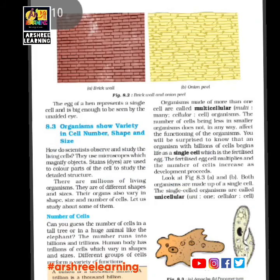In the figure, two pictures are shown: one is a brick wall in which you can see many bricks joined together, and the second shows an onion peel seen under a microscope — it has many cells joined together that make up the onion peel.